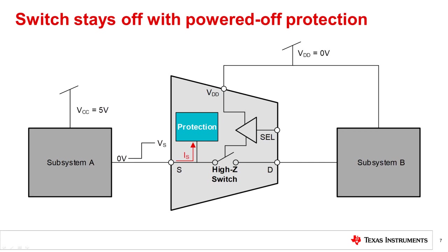Switches with powered off protection include proprietary IP which prevents backpower conditions when there is a voltage present on the signal path pins. With powered off protection, the switch prevents backpowering the supply and the switch remains high impedance, keeping subsystem B protected. A TI switch with powered off protection will maintain a high impedance state on the IO (input-output) and digital logic pins when the switch's supply is unpowered.